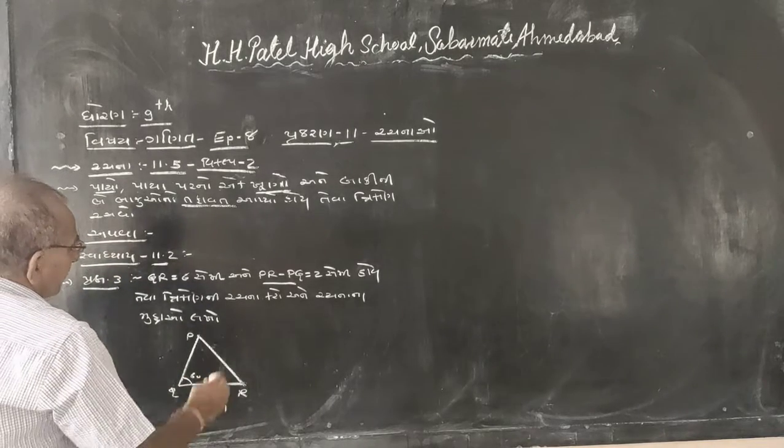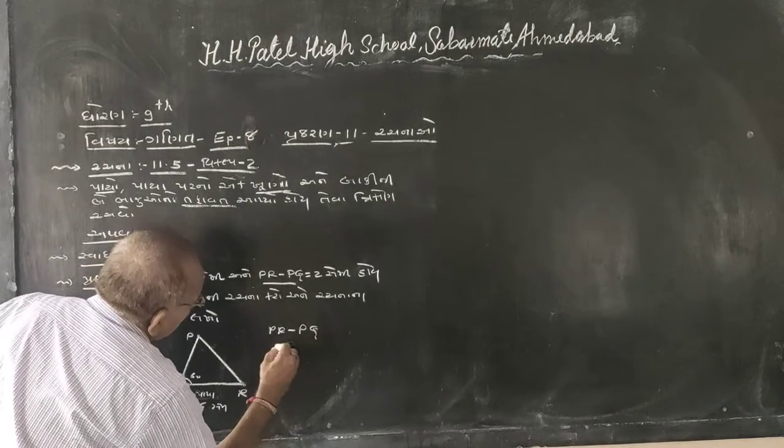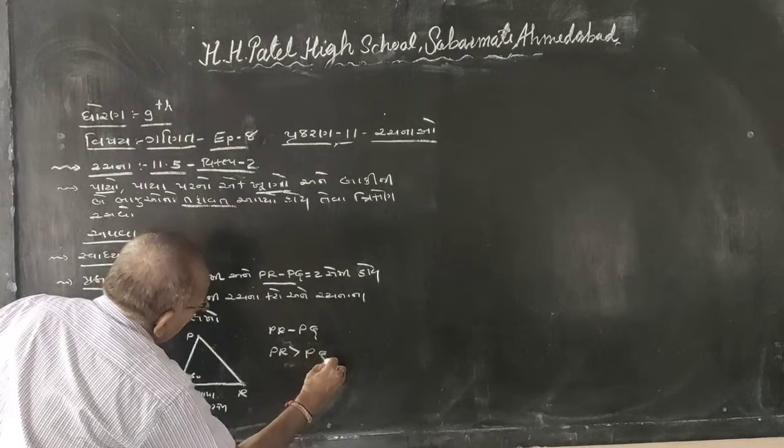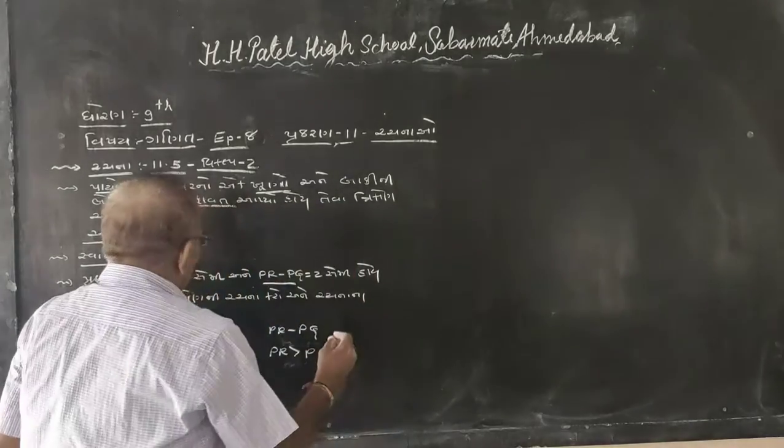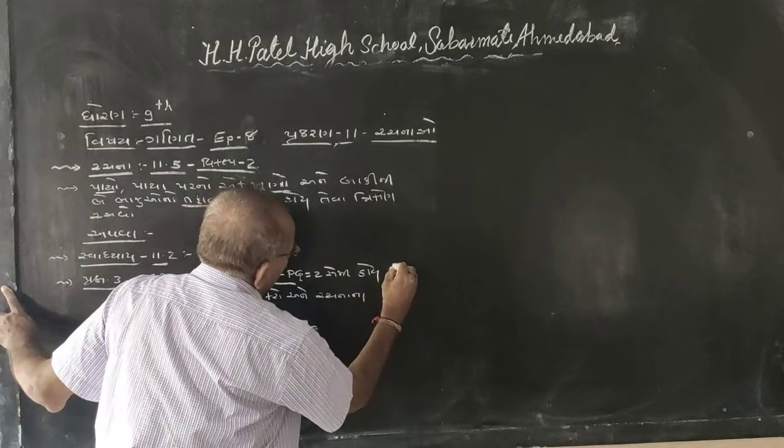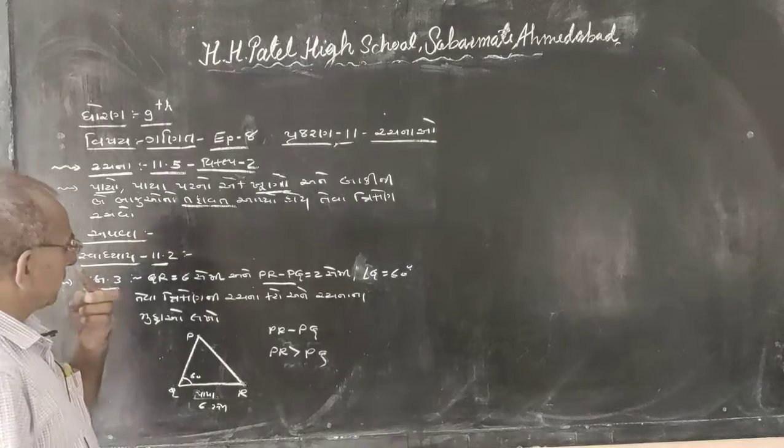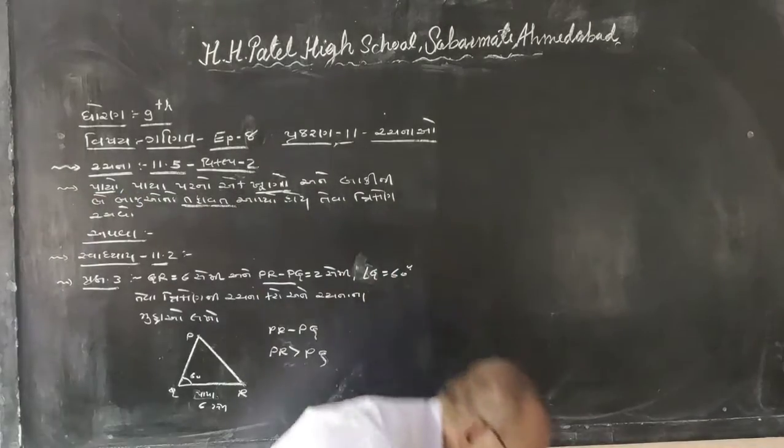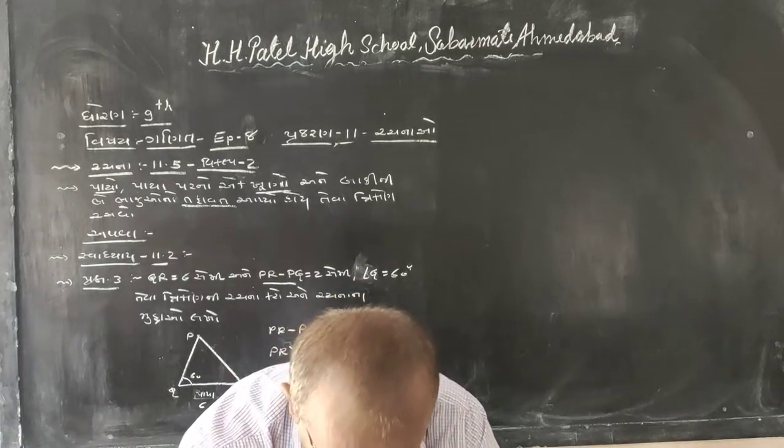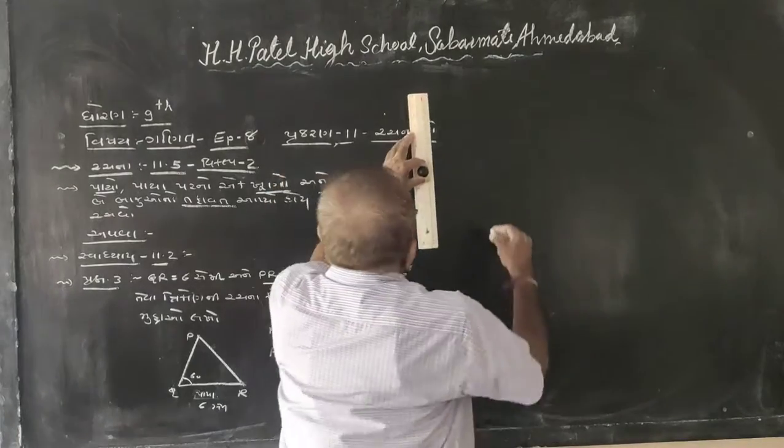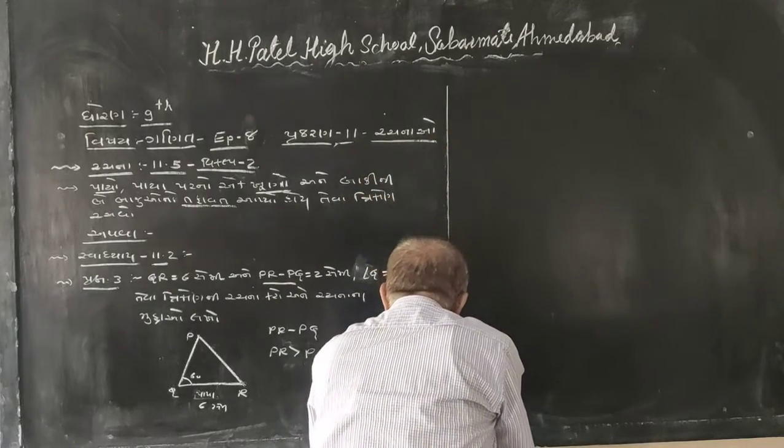If PR is greater than PQ, then angle B is greater than angle C. Therefore, we can conclude this relationship holds.